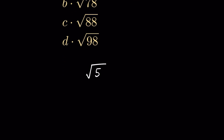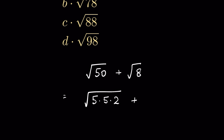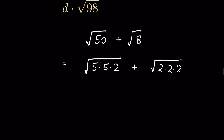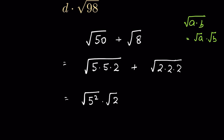So square root of 50 plus square root of 8: square root of 50 we can write as 5 times 5 times 2 under square root, plus square root of 8 as 2 times 2 times 2 under square root. Now, since square root of (a times b) equals square root of a times square root of b, we write square root of 5² times square root of 2, plus square root of 2² times square root of 2.